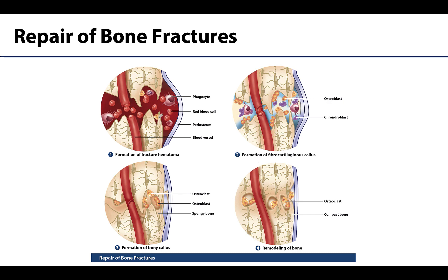Because the blood supply has been affected, there is a stop to blood coming into this region, and all you have is the blood that has escaped from the blood vessels. This affects the bone cells because they are not getting a sufficient supply of oxygen and other nutrients, so the bone cells around this area will die in this region.